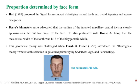Coming on to proportion determined by facial form. Hall proposed the typical form concept, classifying teeth into overweight, tapering, and square forms. Berry's biometric ratio stated that the width of the central incisor is 1/16 the bizygomatic width, and that the outline of the maxillary incisor closely resembles the outline of the face. However, this theory was challenged by Prussian Fisser, who introduced the dendrogenic concept. The dendrogenic concept is governed by the SPF factor: sex, personality, and age of an individual.